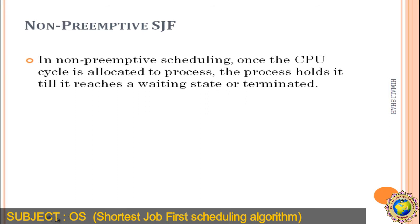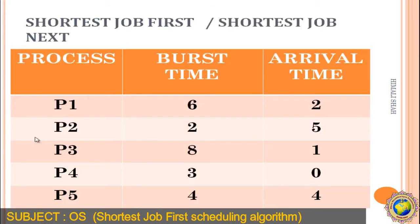Let's look at an example of SJF. We are given the process, burst time, and arrival time. Five processes are considered: P1, P2, P3, P4, and P5. Arrival time of P1 is 2, P2 is 5, P3 is 1, P4 is 0, and P5 is 4.